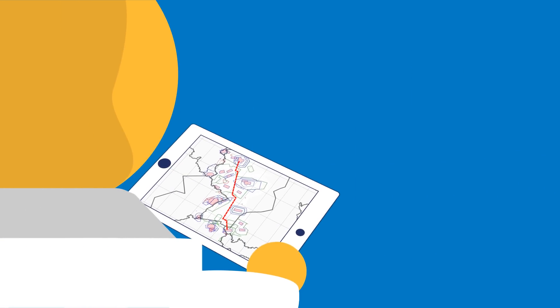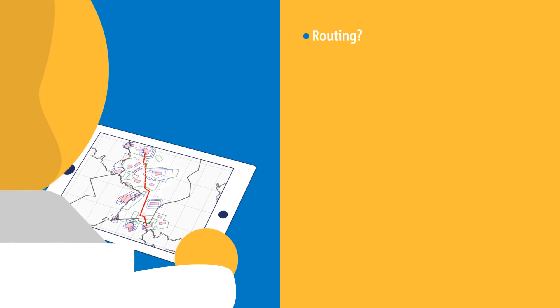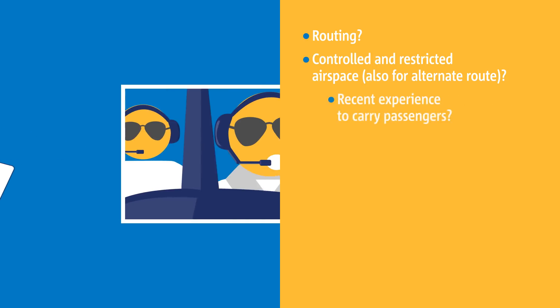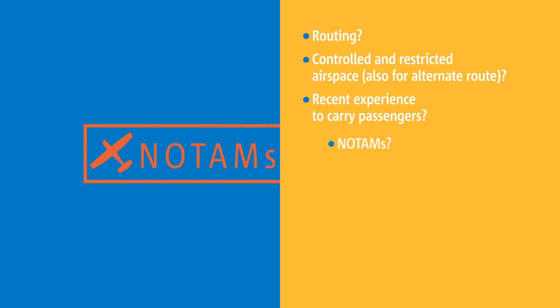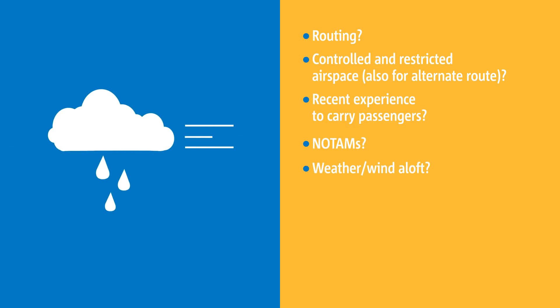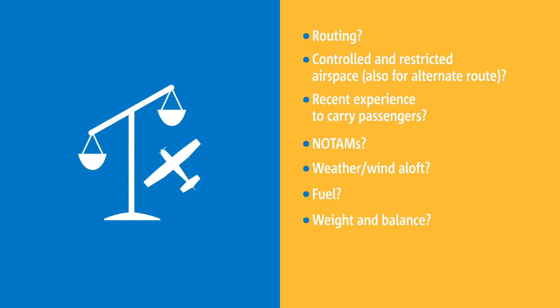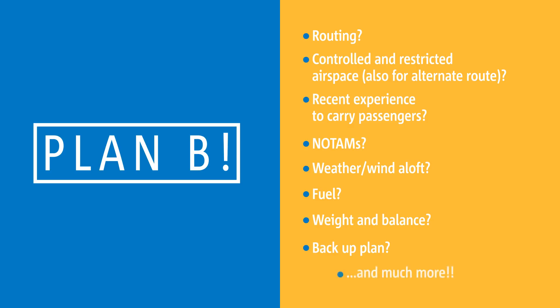Whether or not your route goes through controlled airspace, you have to consider this in your planning. You should always prepare a detailed route and check if there are restricted airspaces on it. Check your recent experience when carrying passengers, NOTAMs, wind and weather conditions, fuel, weight and balance — and you should always have a backup plan ready.